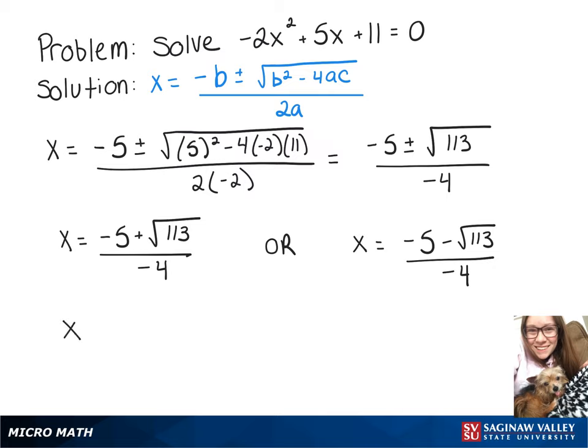And then just to clean this up if we multiply top and bottom by negative 1 so we don't have a negative number in the denominator, we would be left with 5 minus the square root of 113 over 4, or 5 plus the square root of 113 over 4.